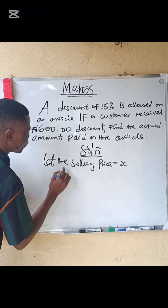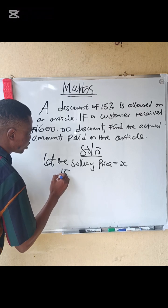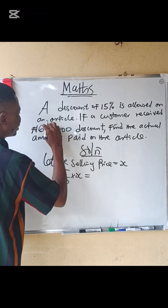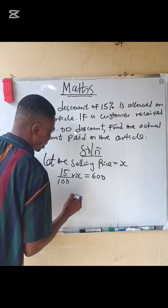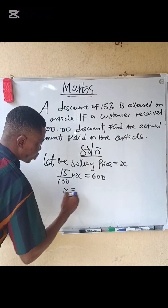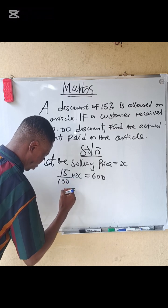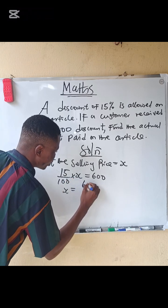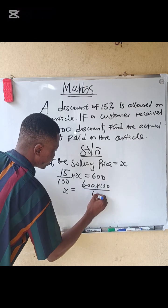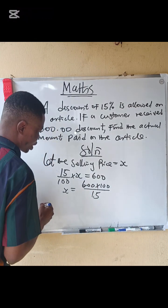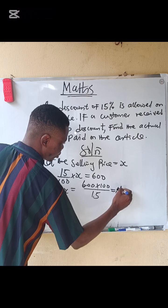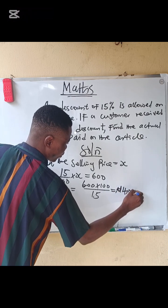So 15 percent divided by 100 multiplied by x gives us the discount amount. That means x equals — when you cross-multiply — 600 multiplied by 100 divided by 15. When you calculate that, the answer is 4,000 naira.